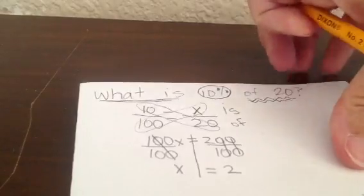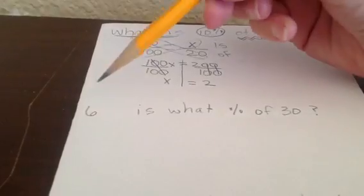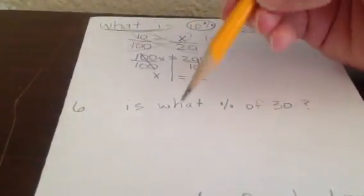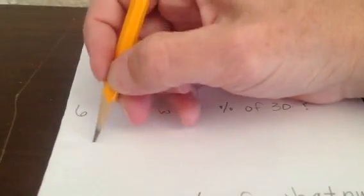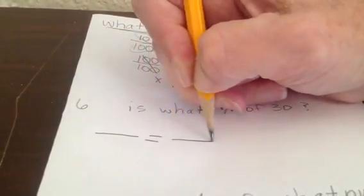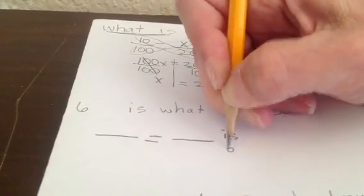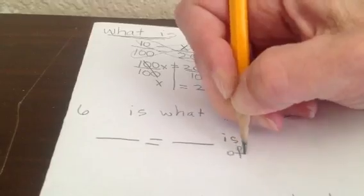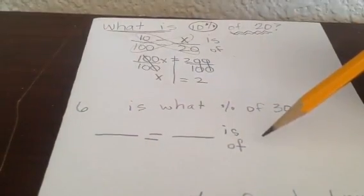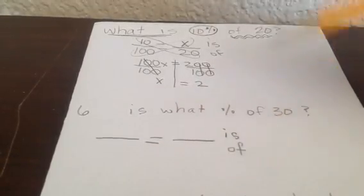Let's try another one. What if it's worded like this? Six is what percent of thirty? Well, don't panic. First, we're going to write our line, our equal sign, another line. Then we're going to write the words 'is over of'. I'm writing funky right now because of the way I'm sitting. You always start here, you always write this first: line equals line, 'is over of'.